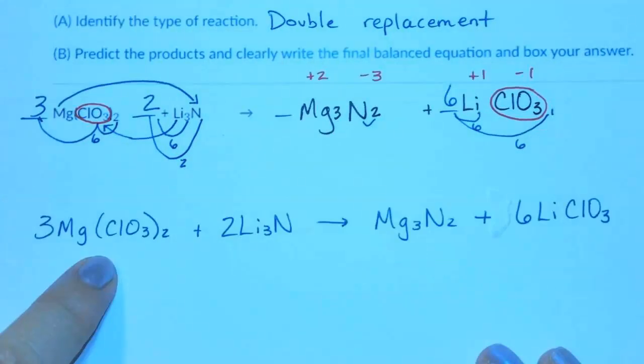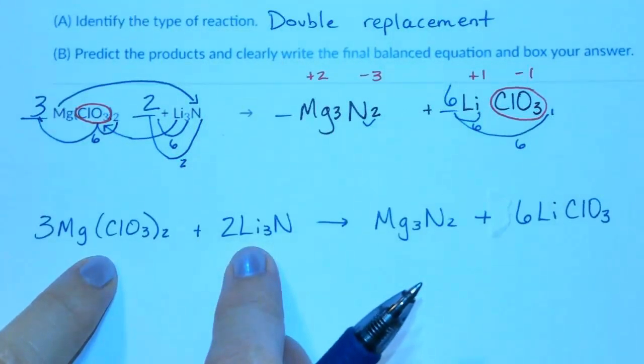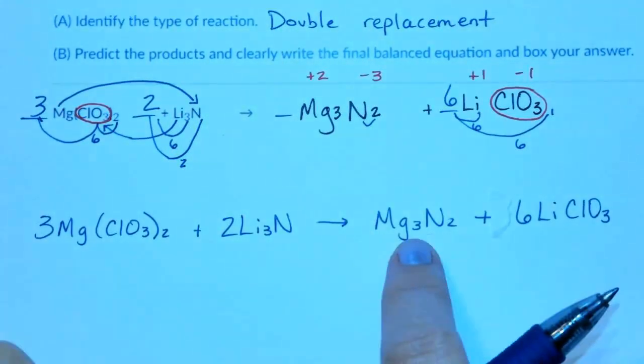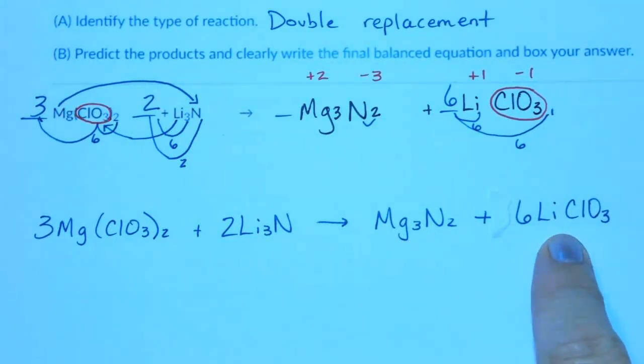Final answer is magnesium chlorates and 2 lithium nitrides react to form 1 magnesium nitride and 6 lithium chlorates.